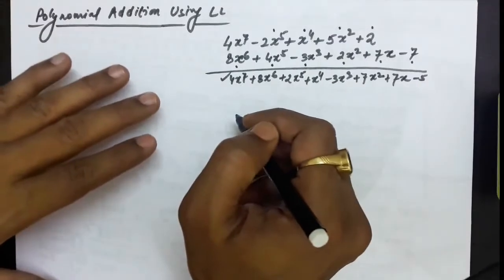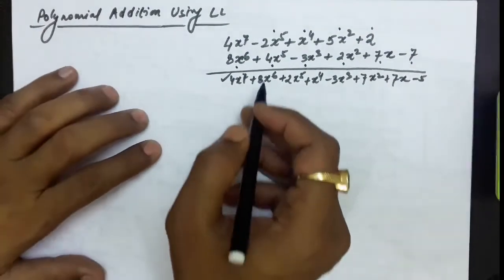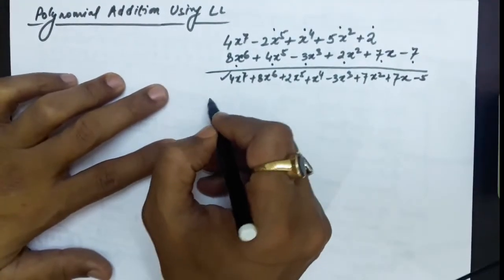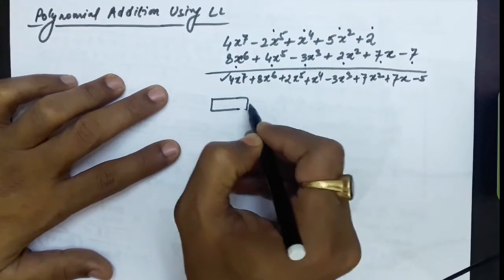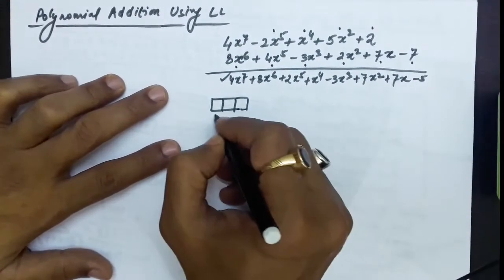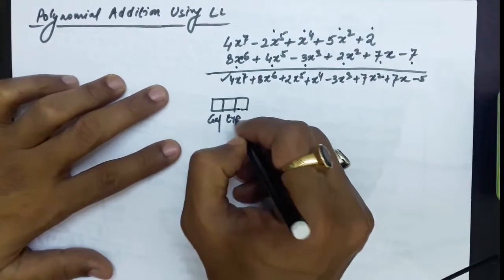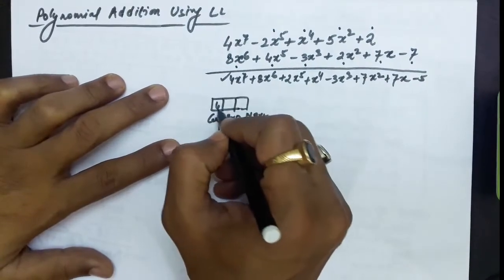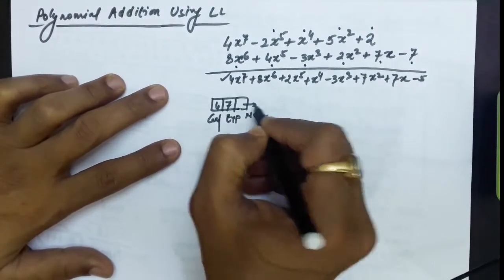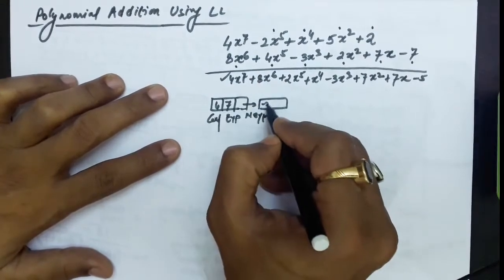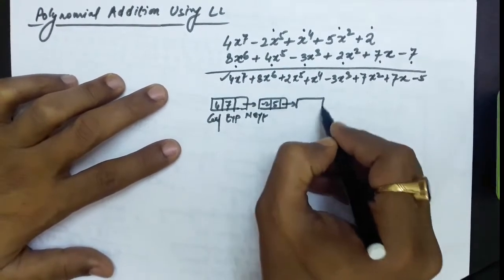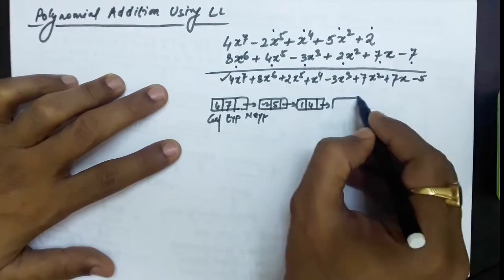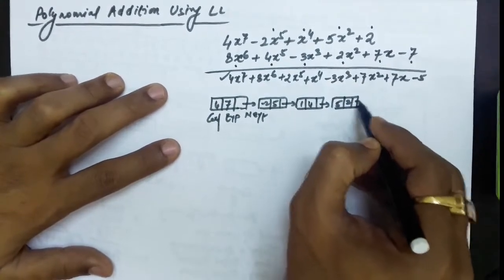Whatever method we just used will be the same approach we employ when performing addition using a linked list. First, store the polynomials in the form of linked lists. Each node in the linked list has three fields: one is the coefficient, the other is the exponent, and the last is the next field that keeps the address of the next node. For example, 4x to the power 7 is stored as coefficient 4 and exponent 7. Then minus 2 is the coefficient and 5 is the exponent. Then 1 is the coefficient and 4 is the exponent. Then 5 is the coefficient and 2 is the exponent.